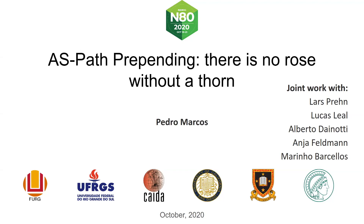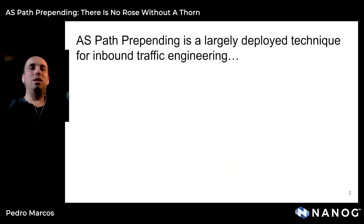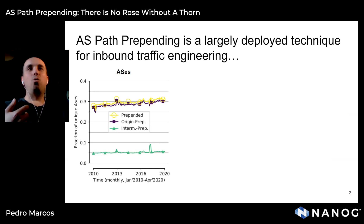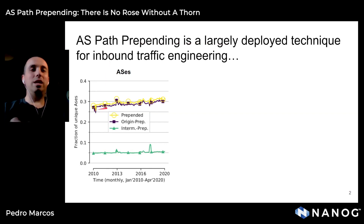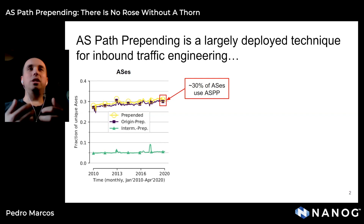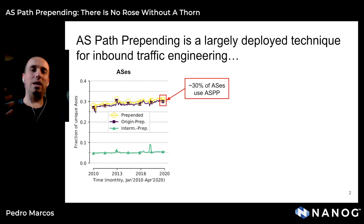Our work is about AS path prepending, which you are probably very familiar with. We decided to study path prepending because it's one of the most deployed inbound traffic engineering techniques by network operators. If we check the evolution of prepending over the last 10 years, we can see a slight increase from 2010 to 2020, with today approximately 30% of ASes using path prepending somehow.